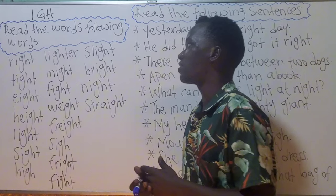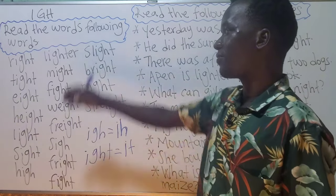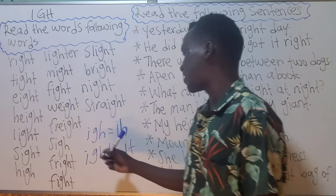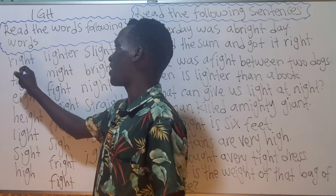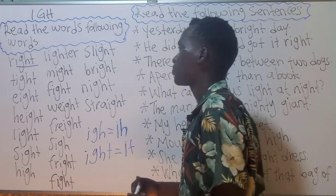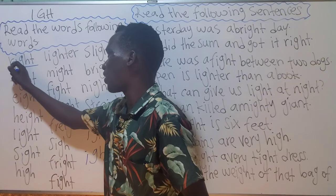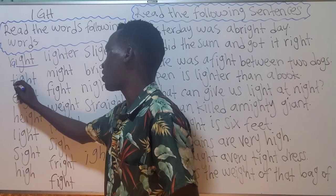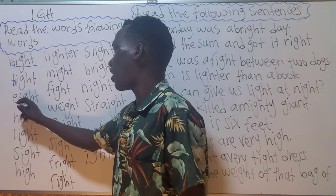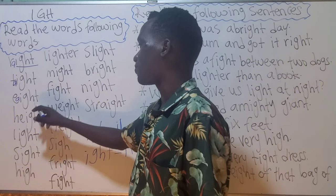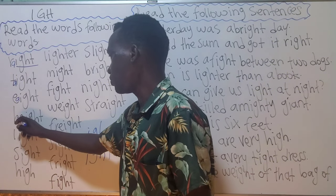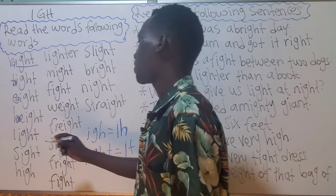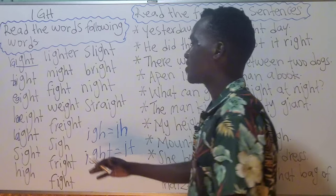IGH — this sound has its own sound. Let us have a look at them. We have 'write' — write it. The 'igh' is here, and there is an invisible A that you cannot see. 'Tight' — there is an invisible A here. 'Eight' — an invisible A here. 'Height' — invisible A between the H and E. 'Light' — invisible A also here.